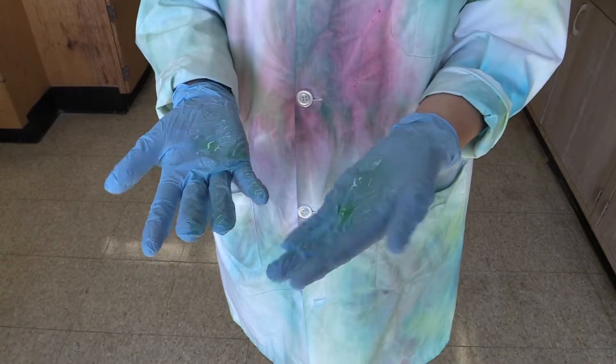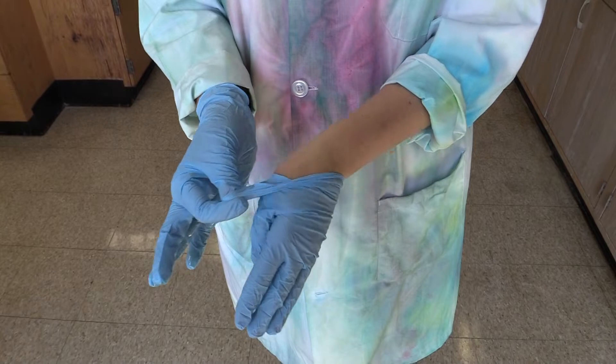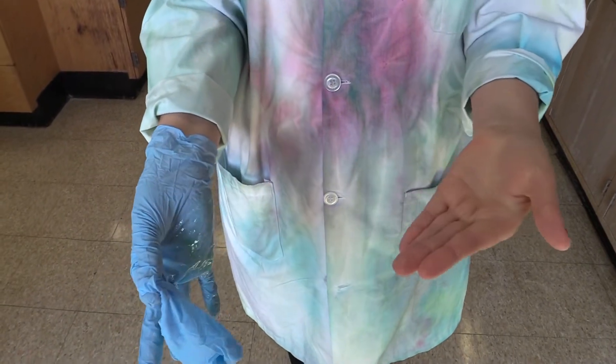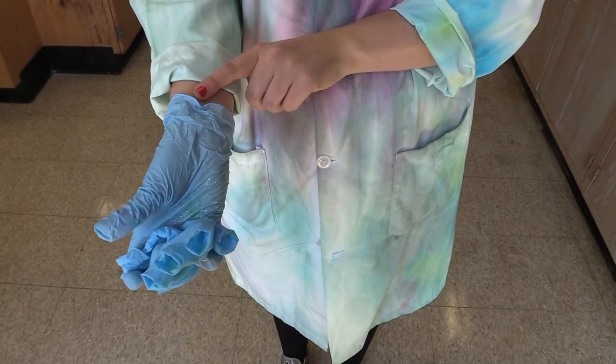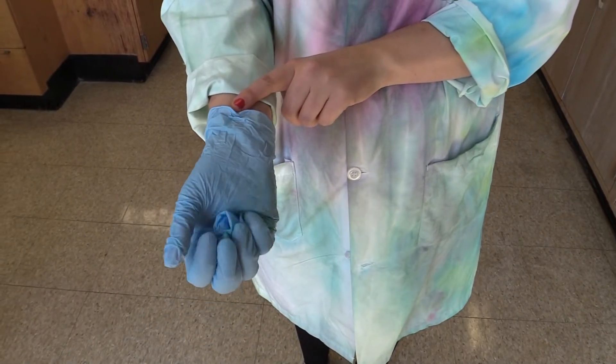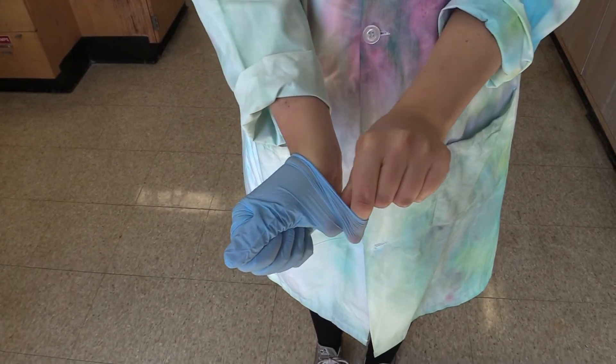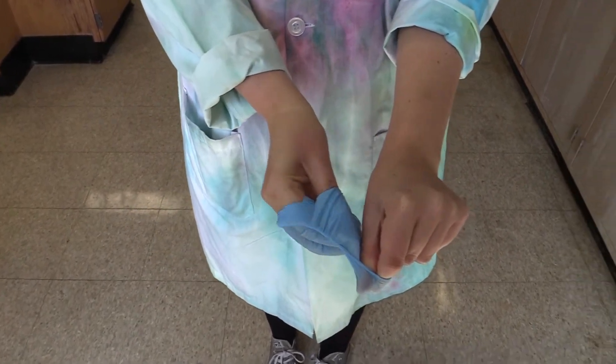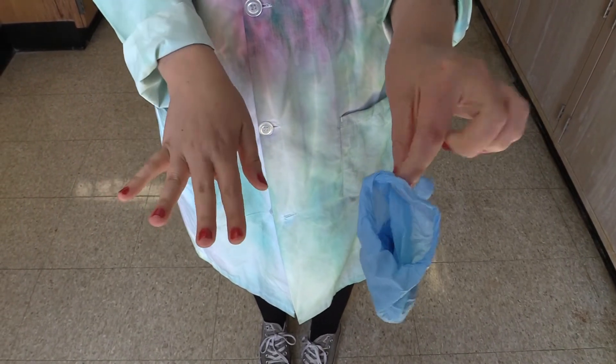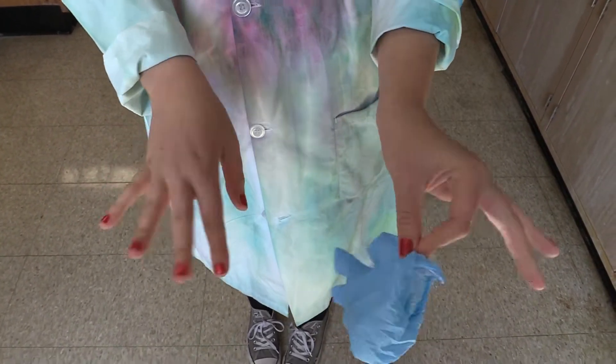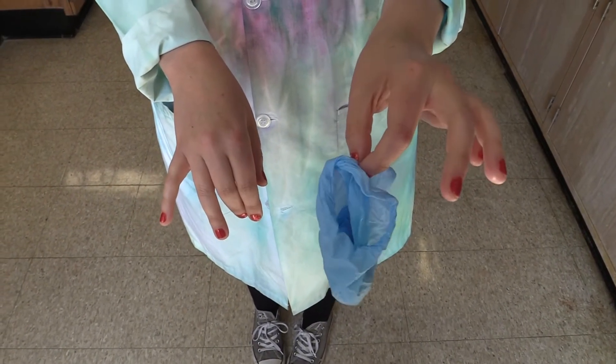Believe it or not, there is a right way to remove your gloves that will help you keep anything that's on them off of you. When you go to take your gloves off, first pinch one of them somewhere around the wrist or at the base of your hand, and peel it off like this, turning it inside out as you go. Then, ball it up and hold onto it with your still-gloved hand. Next, scoop under the glove you're still wearing with your thumb or a finger, and peel the glove off again, turning it inside out as you go. This way you're always touching the inside of the glove, never the outside. The nifty part is, if you do this right, you'll package the first glove inside of the second.